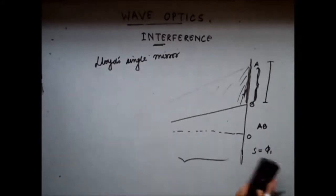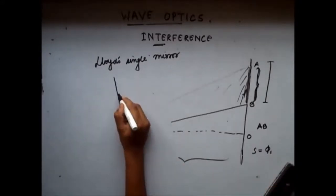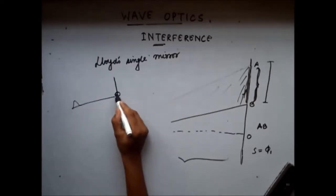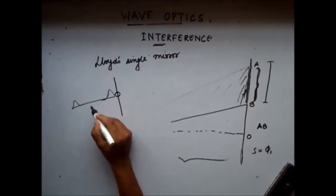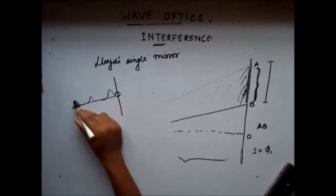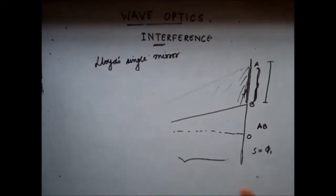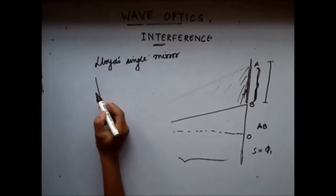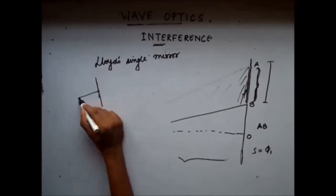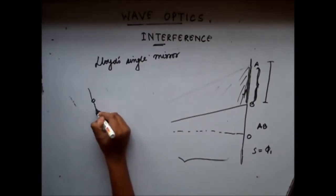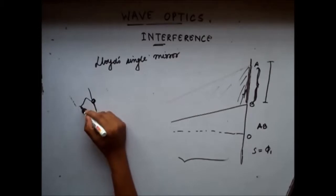Similarly, if we have a loose end and we have a string and we give a push, after reflection the disturbance comes back similar — there is no phase change. So in the case of waves, when the wave gets reflected from a hard surface we get a phase change of π, and when reflected from a loose surface there is no phase change.